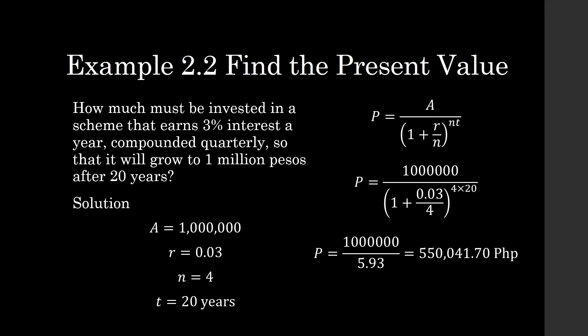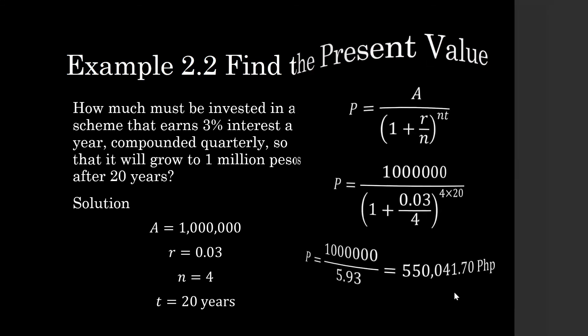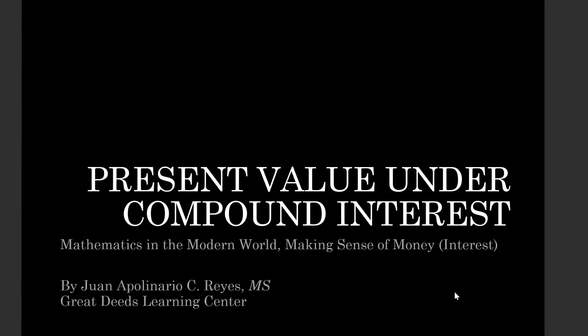So the present value of 1 million pesos 20 years in the future is 550,041.70 pesos. Thank you.